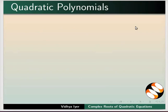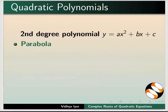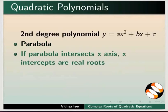Quadratic Polynomials. Let us find out more about a second-degree polynomial y equals ax squared plus bx plus c. The function graphs as a parabola. If the parabola intersects the x-axis, the intercepts are real roots.